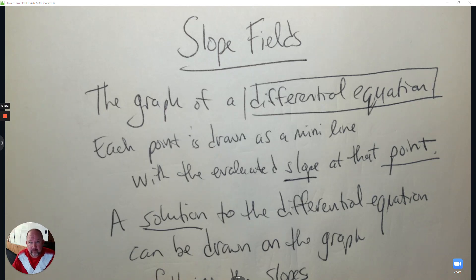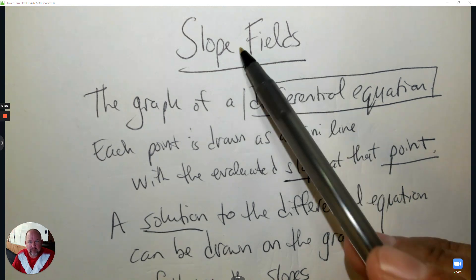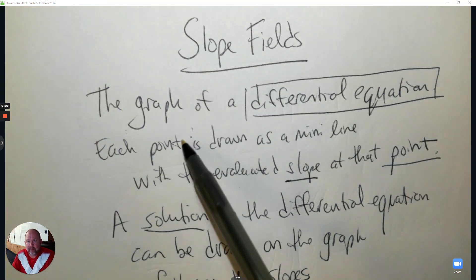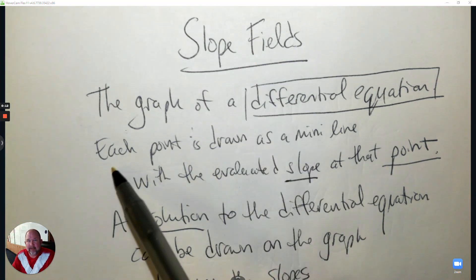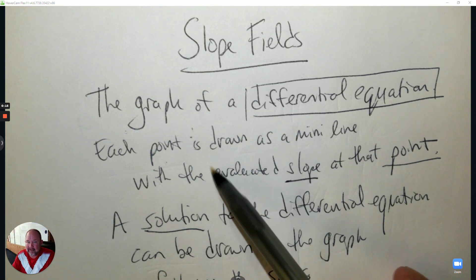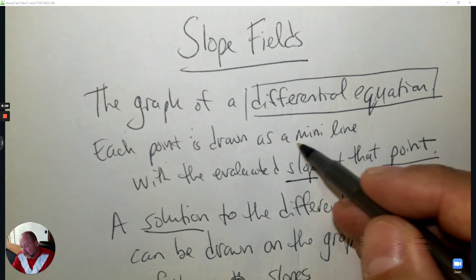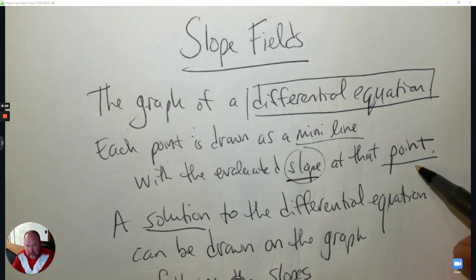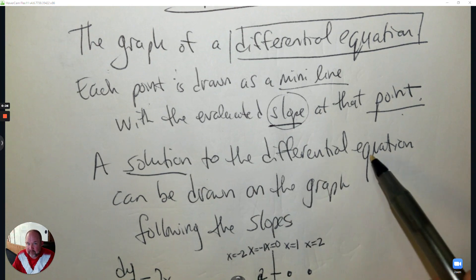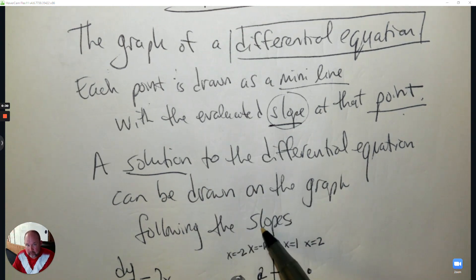This is your review on slope fields. The graph of a differential equation is a slope field. Each point is drawn as a mini line with that evaluated slope at that point. A solution to the differential equation can be drawn on the graph following the slopes.